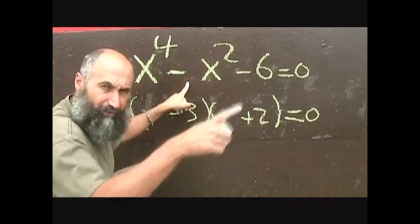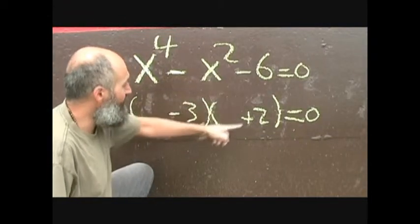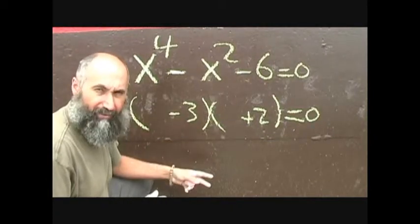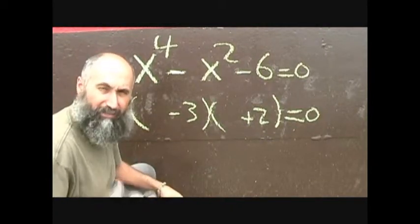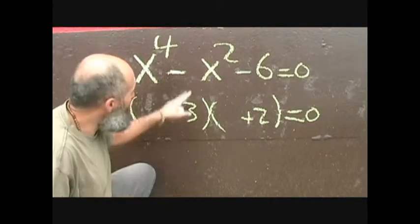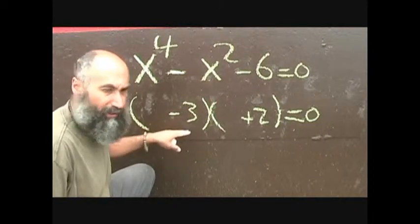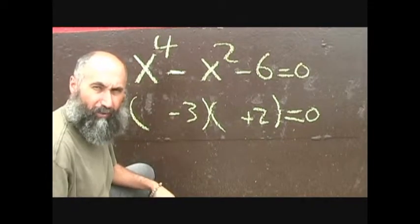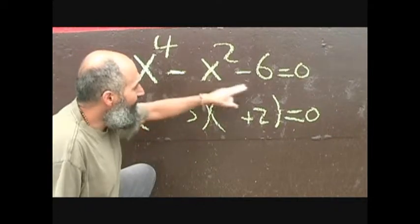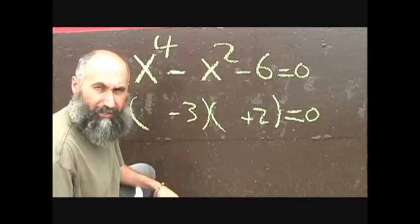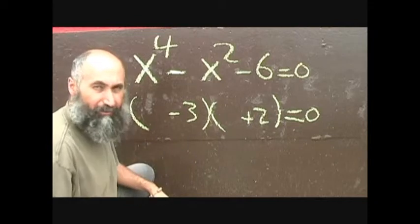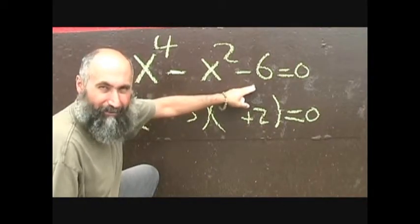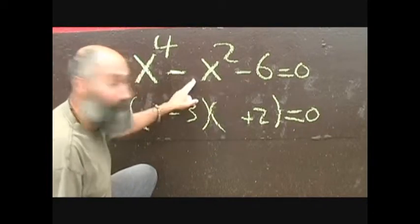If you know your multiplication table, this stuff should come fairly easily. If you don't, it's going to take a little effort. Initially, it can be a little hard to figure out what the two numbers are, and I'm using really simple numbers here. Later we might do problems with more complicated numbers, so the better you know your multiplication table, the easier this will be.